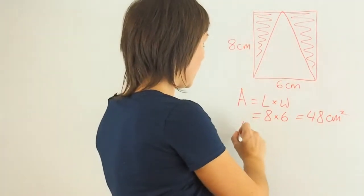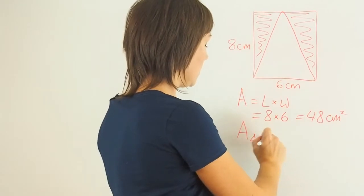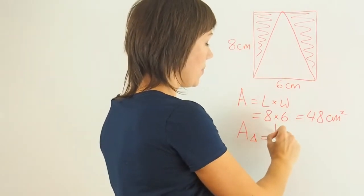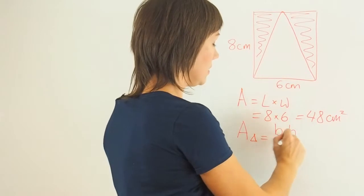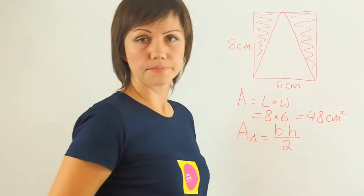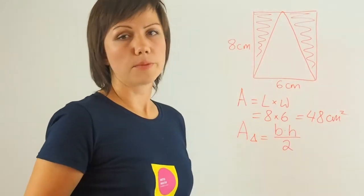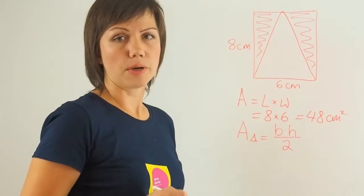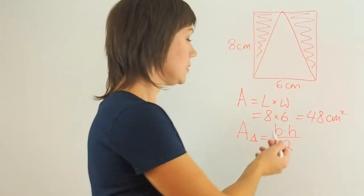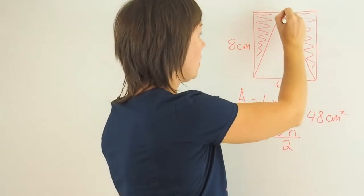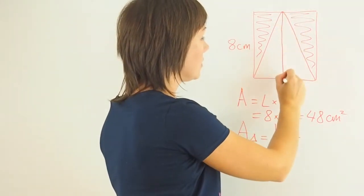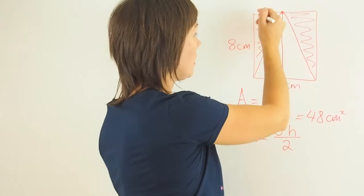The area of a triangle is equal to base times height over 2. You'll have a formula sheet for that. You don't have to memorize these formulas.